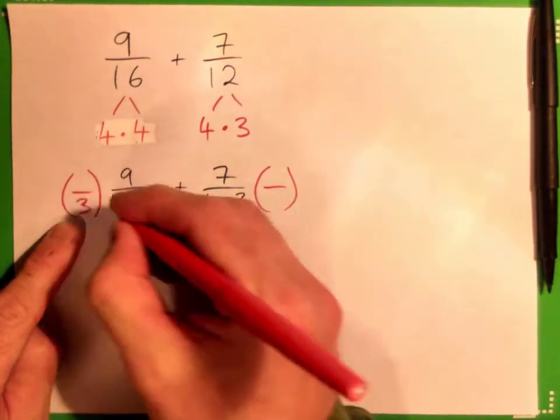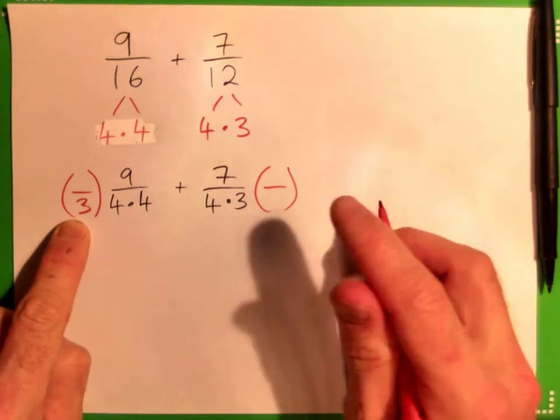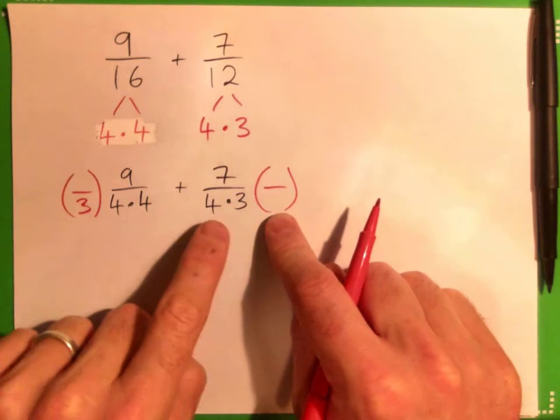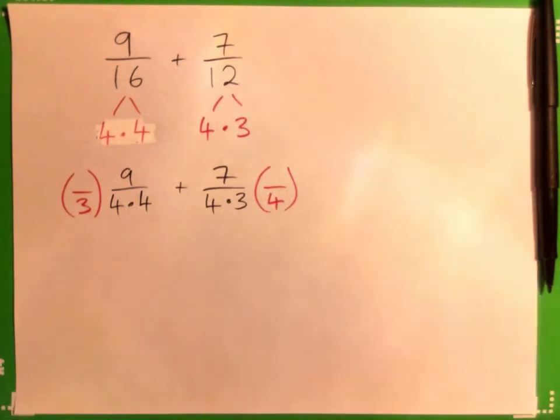Lovely. Put a 3 here, yeah. Because now we've got a 3, 4, 4, and here we've got a 4, 3, oh, missing a 4. Got it? Now the bottoms are the same. Magic.